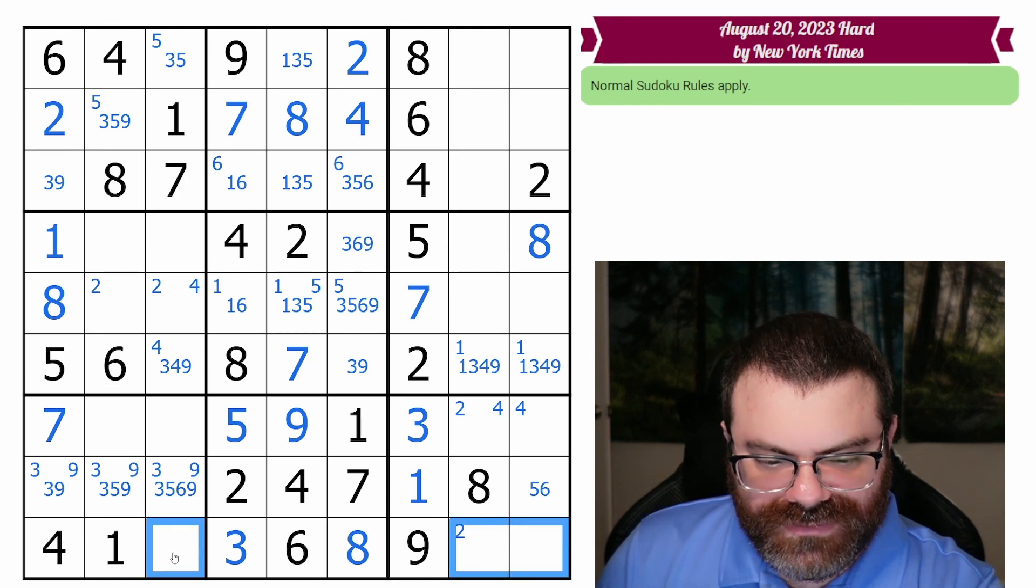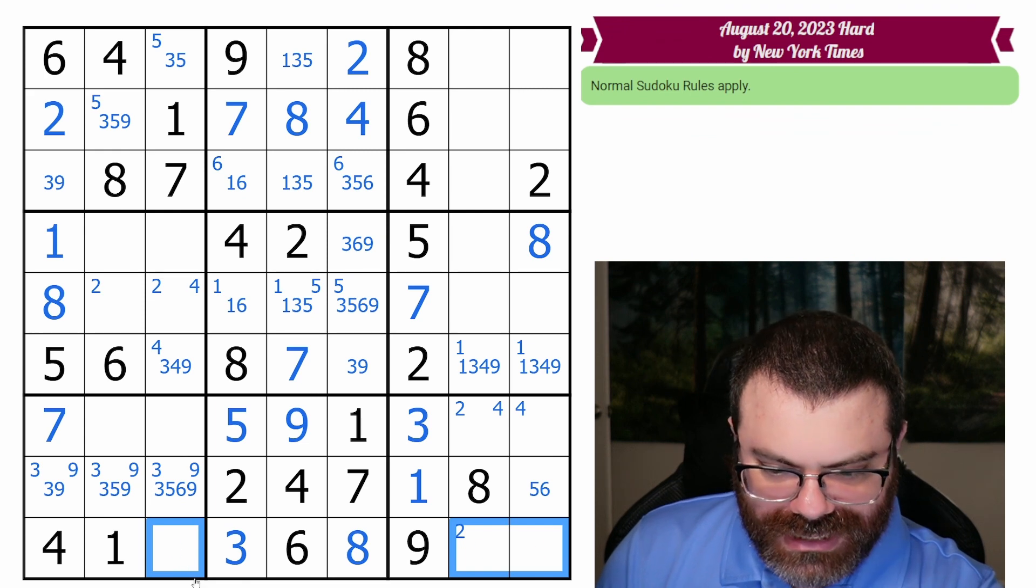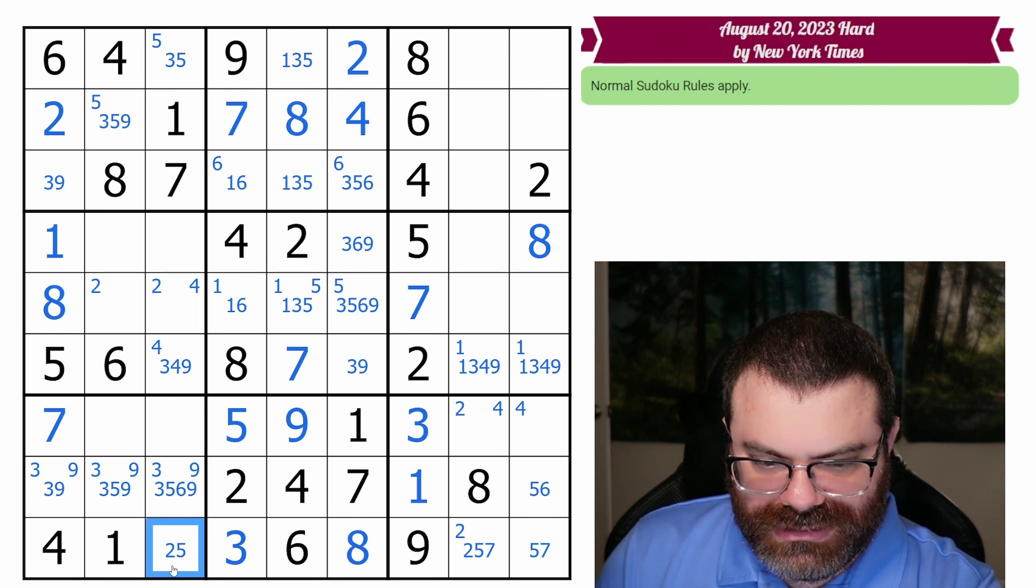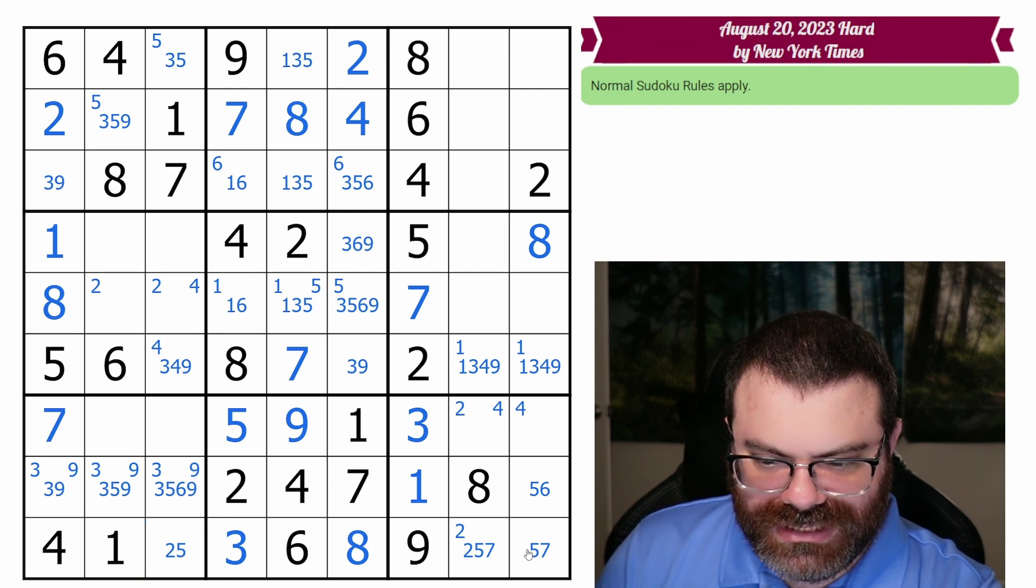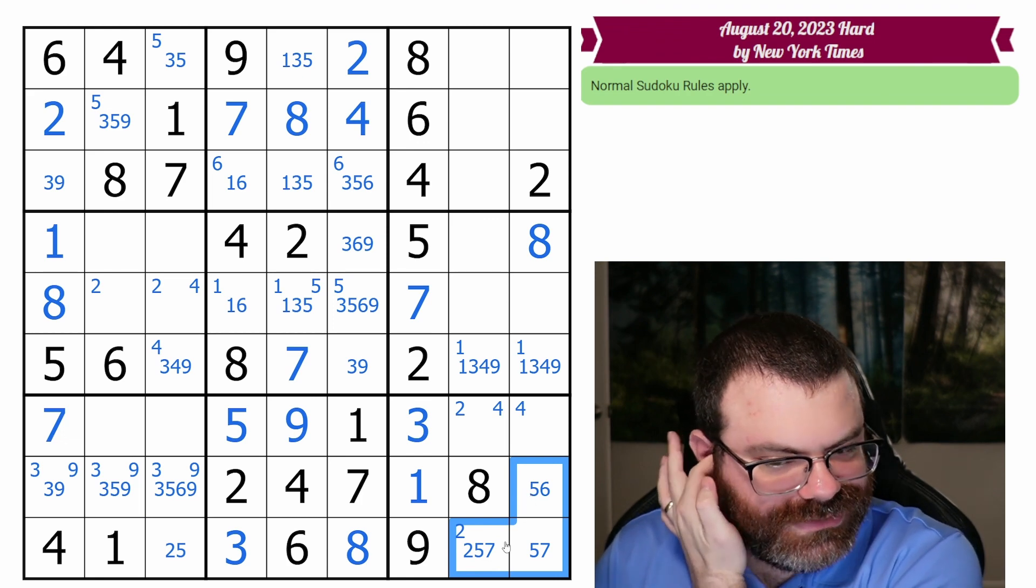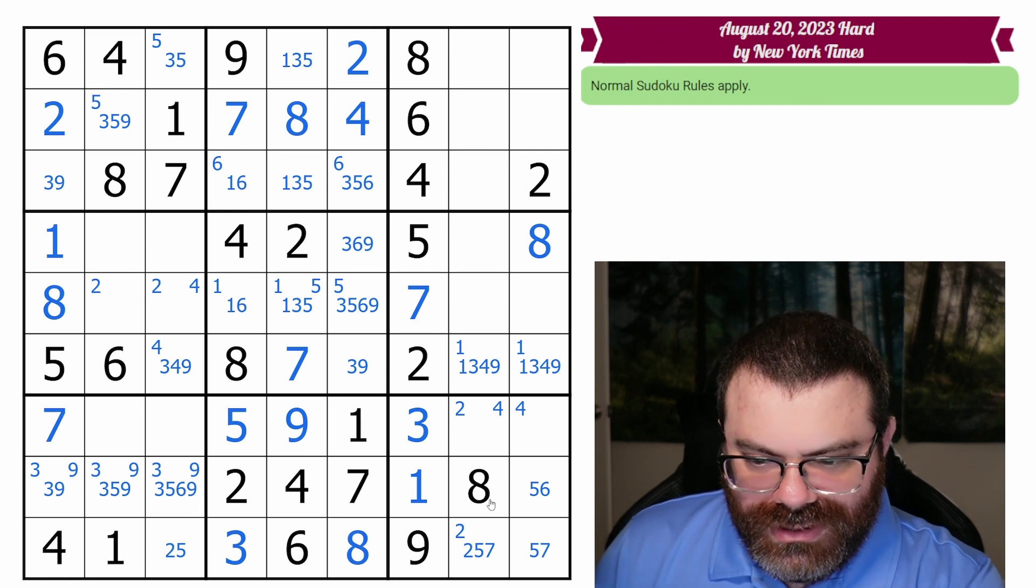This row needs three left. I'm looking to see if two can be here. Two, five, and seven. I'm not sure that did anything. I really want that to be a triple, but it's not. Okay.